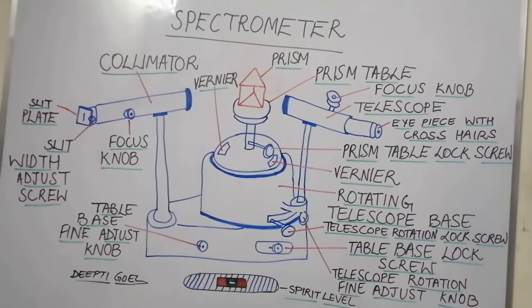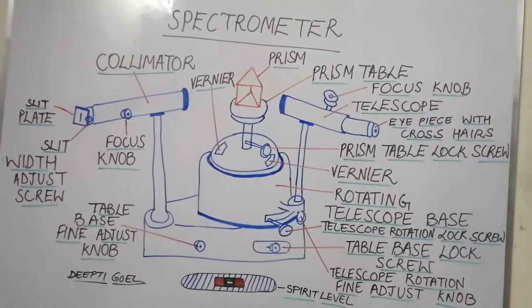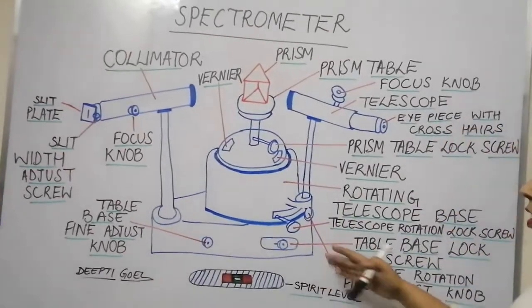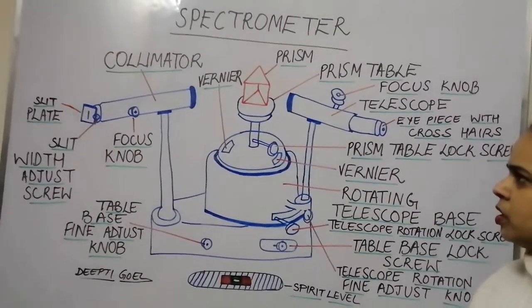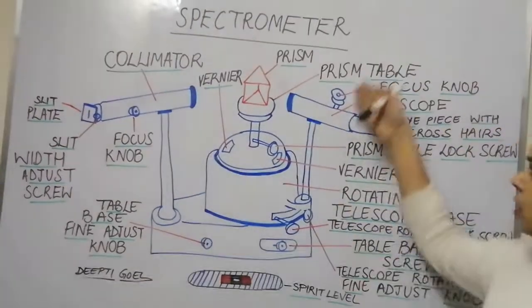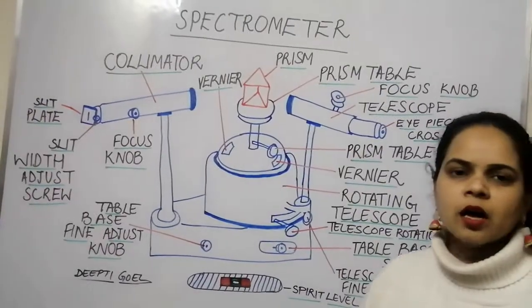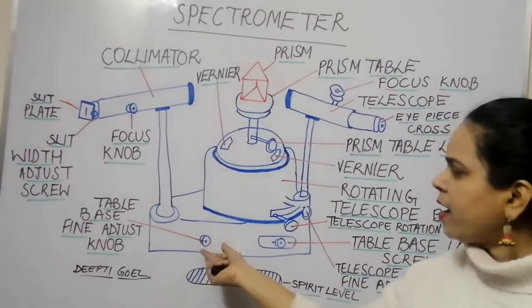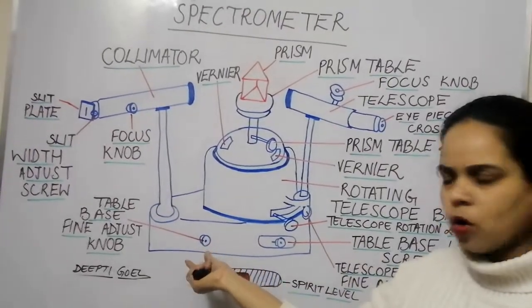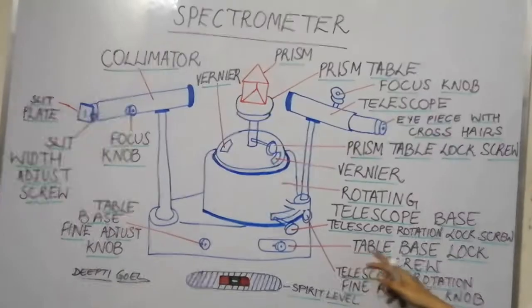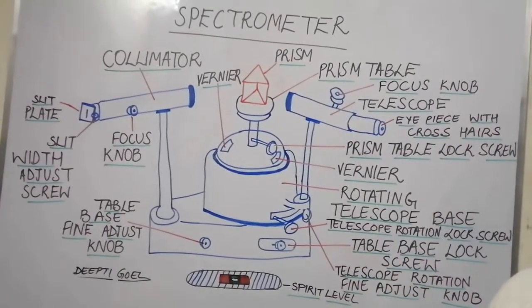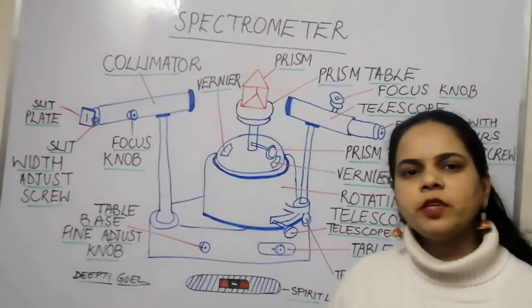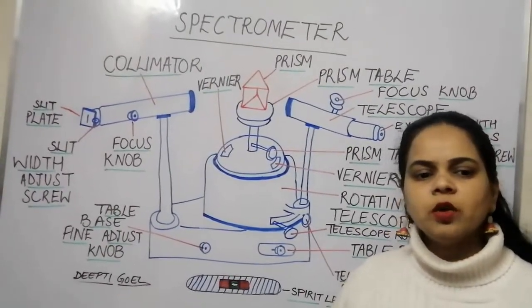The spectrometer has a table base on which the collimator, telescope, and prism table are mounted. In the table base we have a fine adjusting knob and a table base lock screw. When we lock the table base, the whole assembly of the spectrometer will not move.